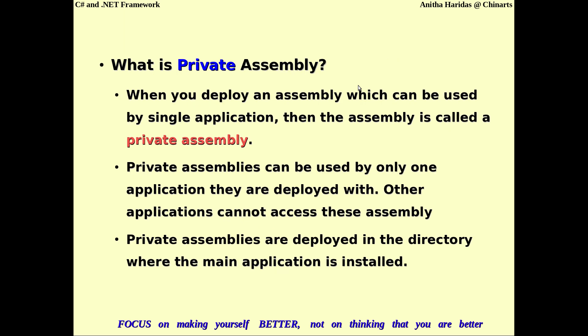A private assembly is one deployed for use by a single application. It can be used by only one application; other applications cannot access it. Sometimes you create a .dll file that can be used by only one application — that is called a private assembly. Private assemblies are deployed in the directory where the main application is installed.